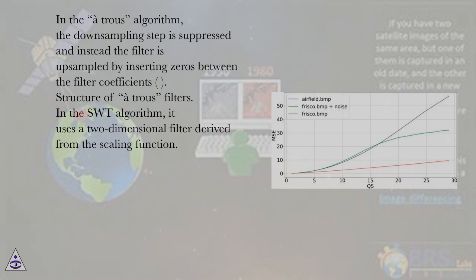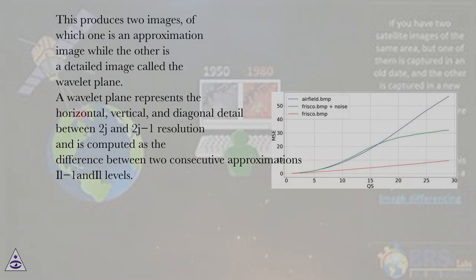Structure of à trous filters: In the SWT algorithm, it uses a two-dimensional filter derived from the scaling function. This produces two images, of which one is an approximation image while the other is a detailed image called the wavelet plane. A wavelet plane represents the horizontal, vertical, and diagonal detail between 2j and 2j-1 resolution.